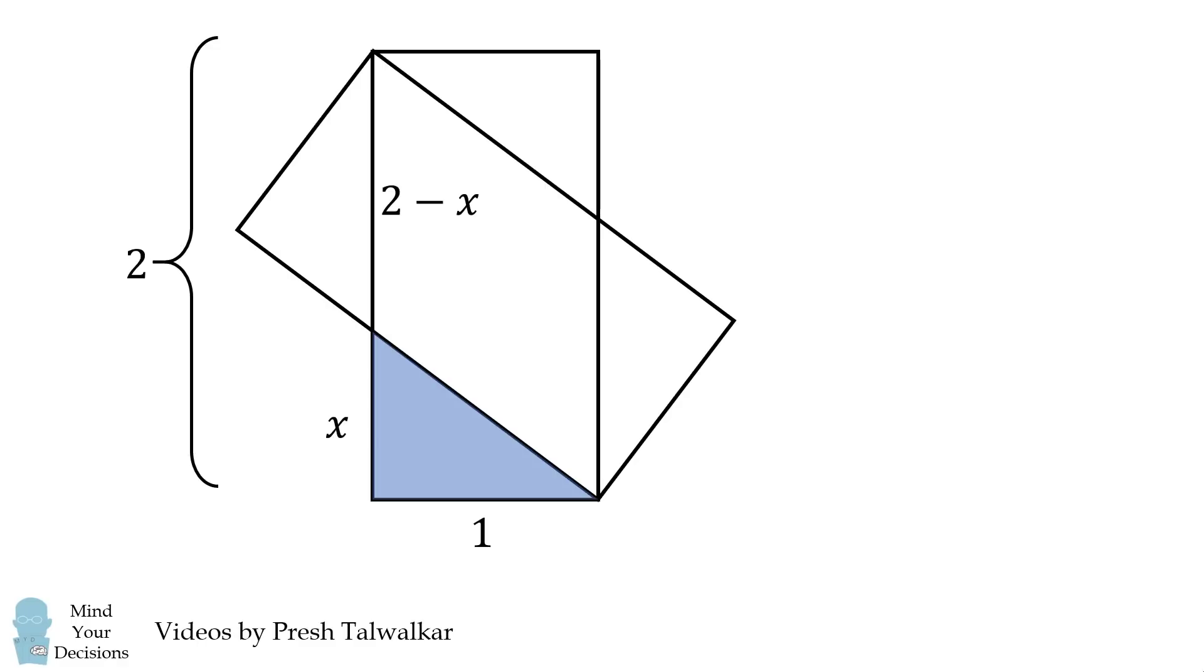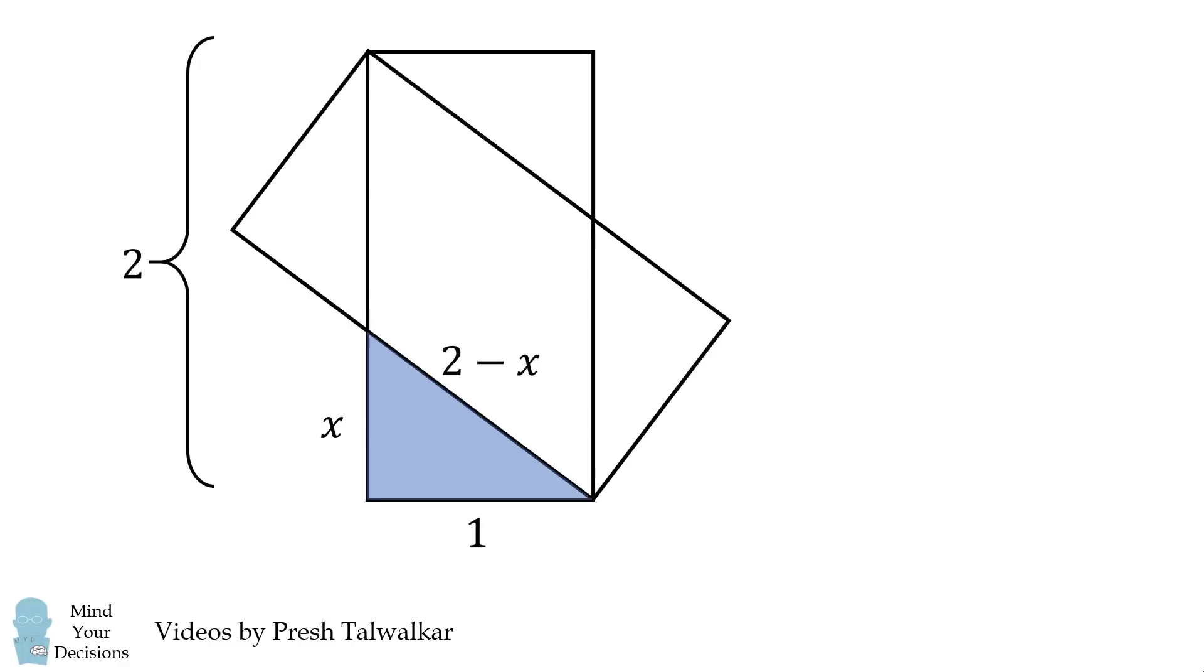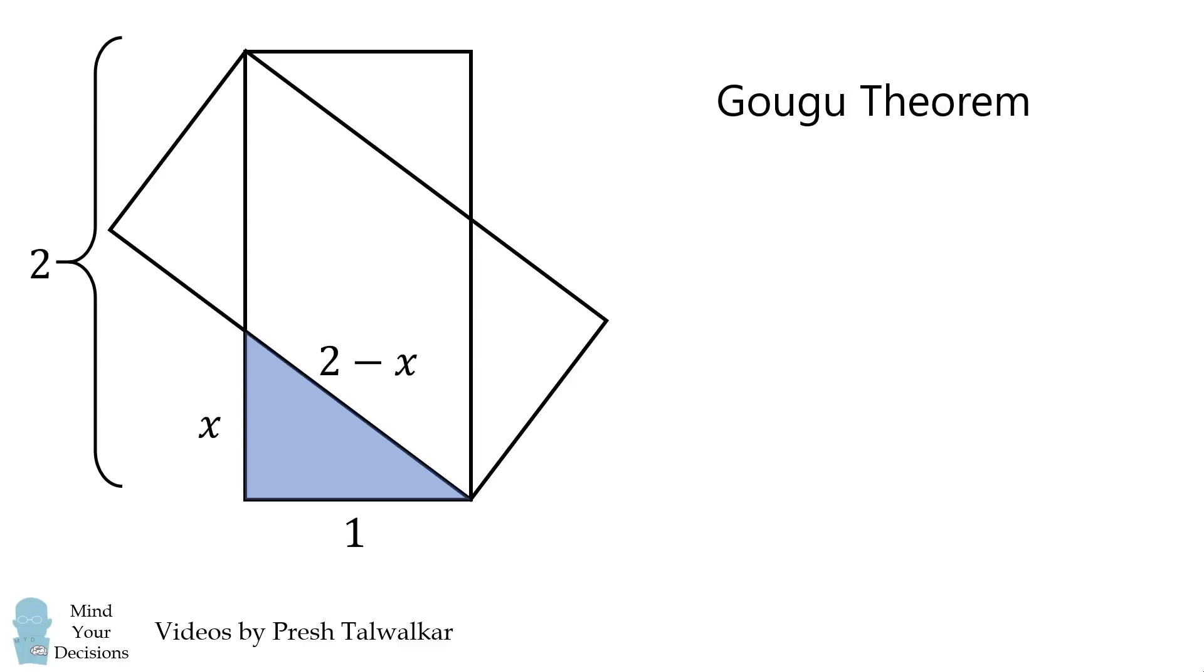By symmetry, the other rectangle will have exactly the same lengths. The portion that's not overlapping will be equal to x, and the portion that is overlapping will have a length equal to 2 minus x. We can then consider just this right triangle. By the Pythagorean theorem,